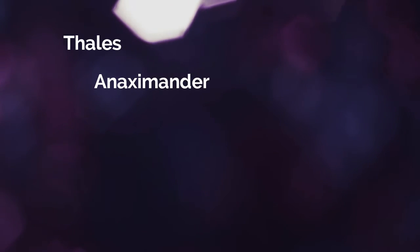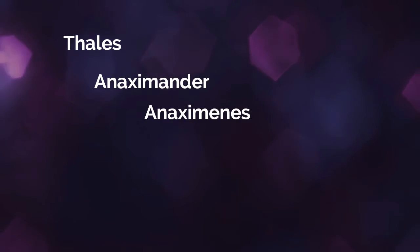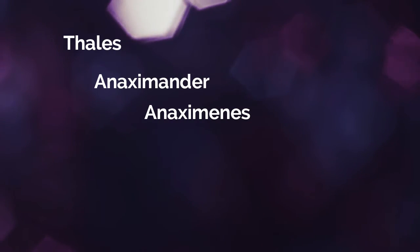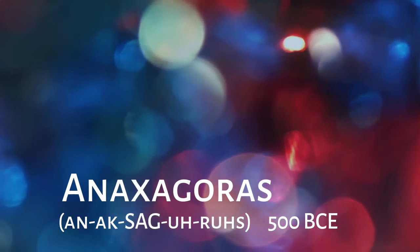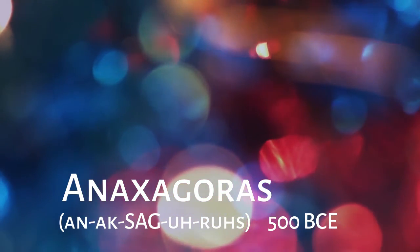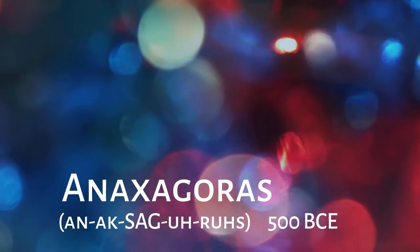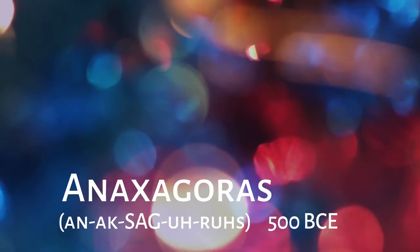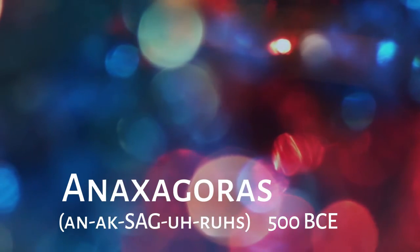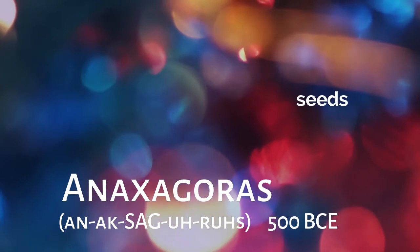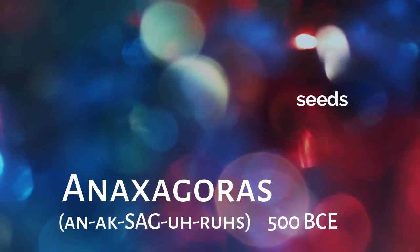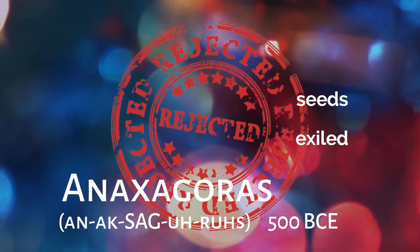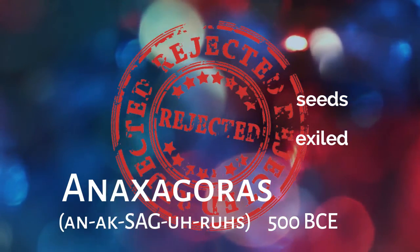We've gone through Thales, Anaximander, and Anaximenes, and the last person we have to go through today is Anaxagoras. Anaxagoras was born in 500 BCE and was a student of Anaximenes. He believed that men originally existed as tiny particles or seeds. He also believed in the heavens instead of mythical gods, and was exiled because of it.